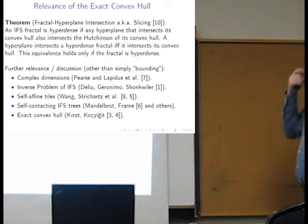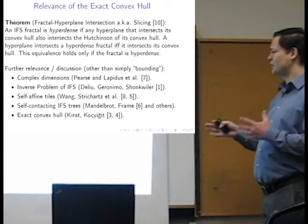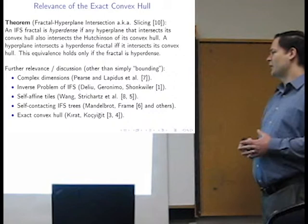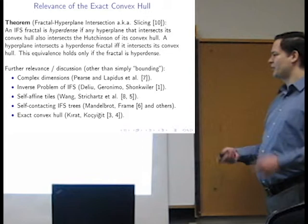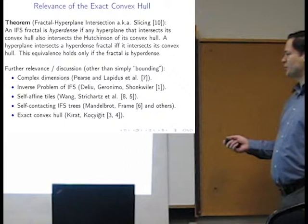So what is the relevance of the convex hull? Well, for me personally, it's the fractal hyperplane intersection problem, or fractal line intersection in the plane, also known as slicing. Falconer and his group does quite a bit of work on that, which recently had like a mini-conference on it in England. So this theorem was shown in this paper. It's one of my papers that just got published a month ago.